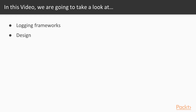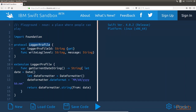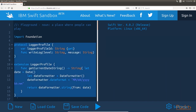In this video we will start with logging frameworks followed by the design. Let's start off by looking at the logger profile. We will begin the logger profile design by creating a protocol named logger profile. This protocol will define the interface that the logger profiles will present, and any type that conforms to this protocol can be used to log messages. The out-of-the-box framework will provide two types that conform to the logger profile protocol. These types will be of the logger null and logger console types. We will start off by looking at the logger profile protocol and the logger profile protocol extension.